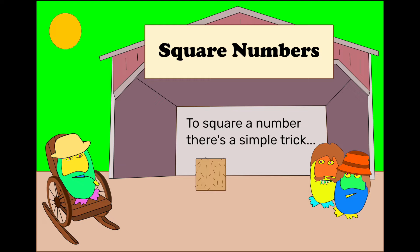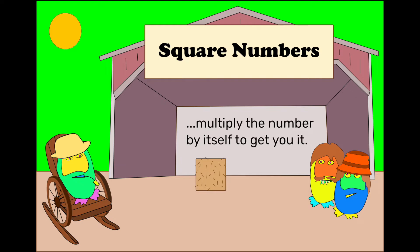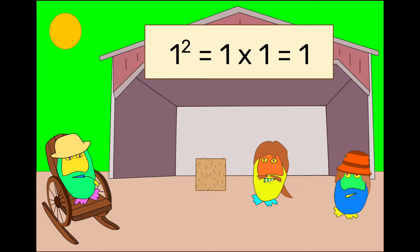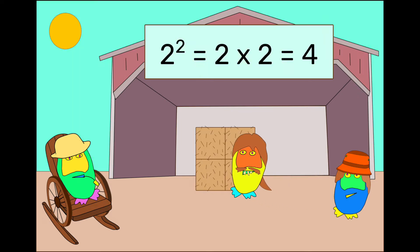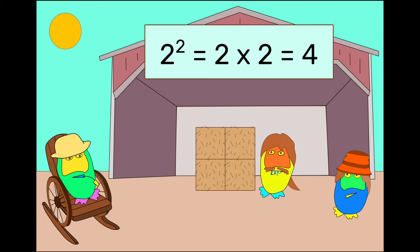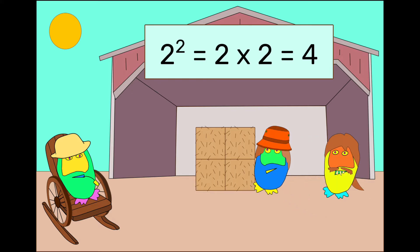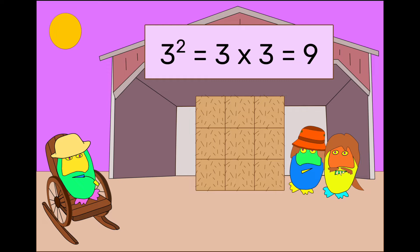Square a number, there's a simple trick. Multiply the number by itself to get to it.